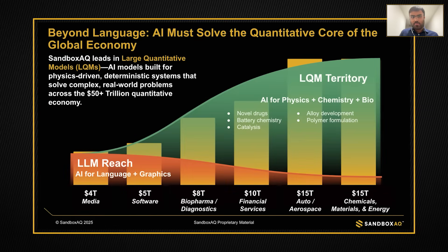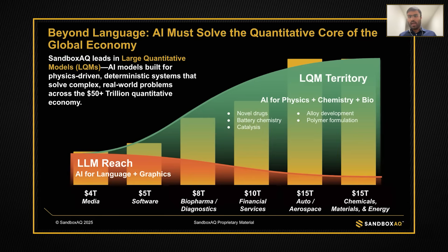At Sandbox AQ, we focus on the quantitative core of the global economy, as opposed to large language models or LLMs, which are trained on text-based data. Our large quantitative models are trained on physics-based data, and they help us tackle a very large trillion-dollar quantitative economy. We work on problems ranging from drug discovery to battery chemistry, alloy development, polymer formulations, and of course, catalysis.